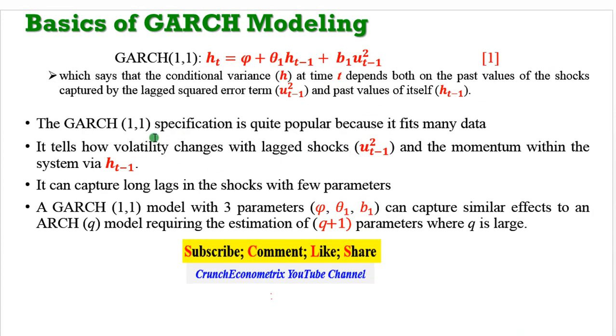Still on GARCH modeling basics, the GARCH(1,1) specification is very popular because it can fit into many data. It tells how volatility changes using the lagged shocks—the squared error structure—and the momentum within the system via the lagged value of the conditional variance. It can capture long lags in the shocks using just a few parameters.